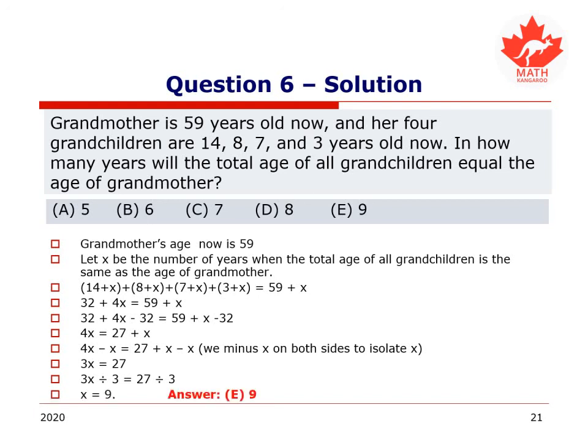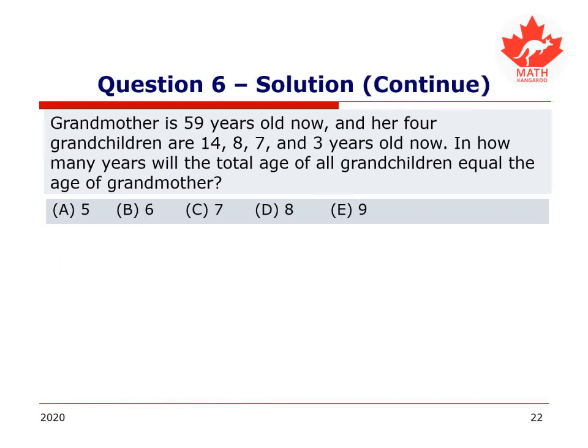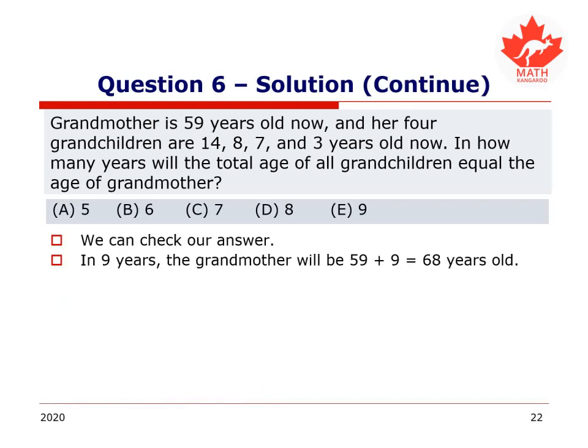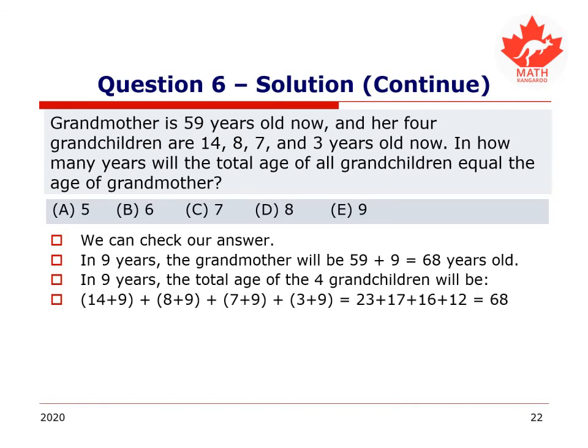In 9 years from now, grandmother is going to be 68. And if you check, grandchildren will be 14 plus 9, 8 plus 9, 7 plus 9, 3 plus 9. And their total sum will indeed equal 68 as well. It's always good to check our answers when we have them.